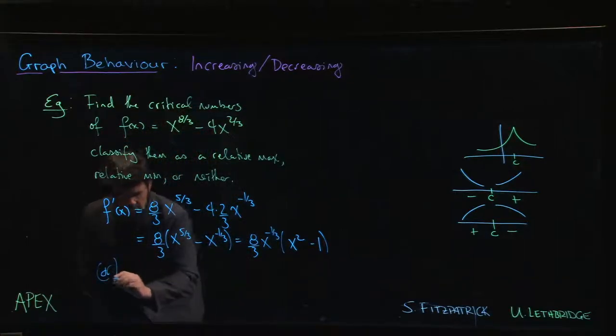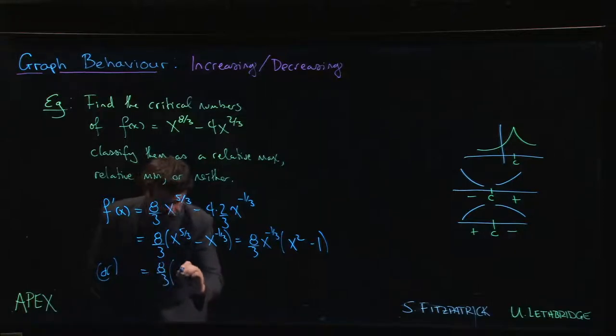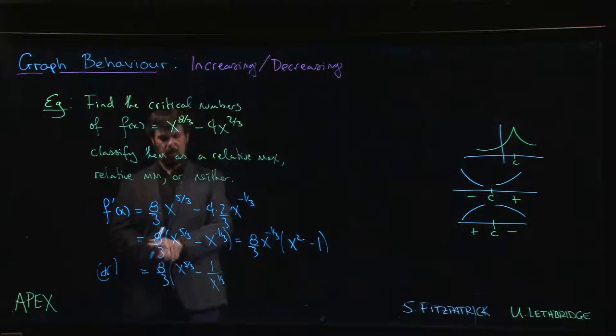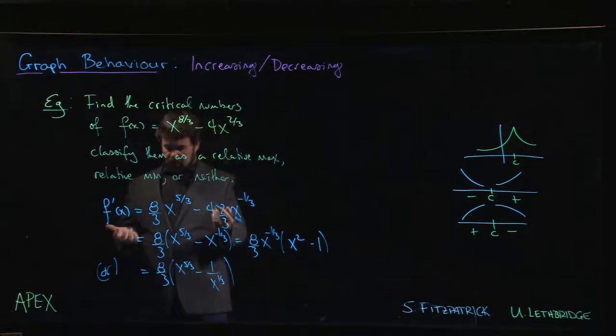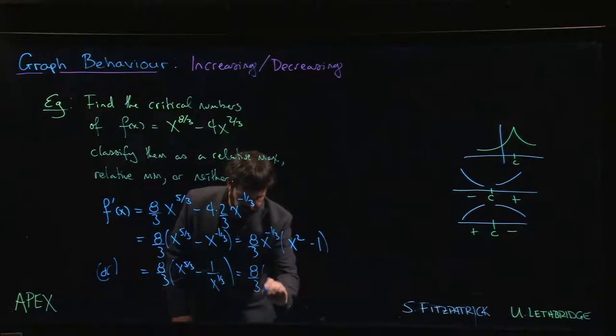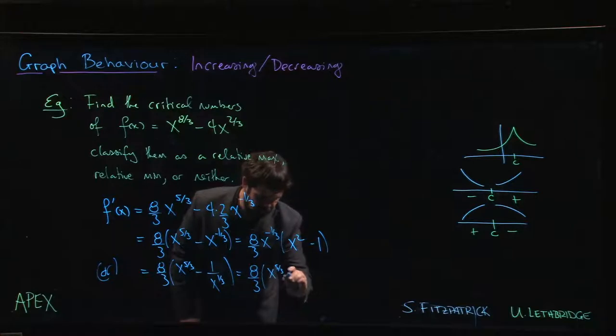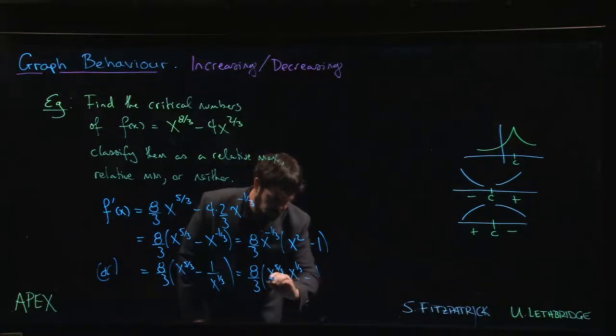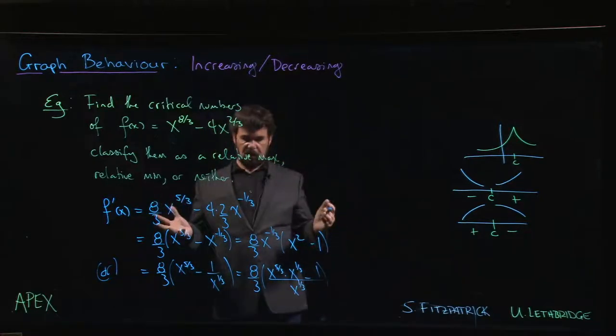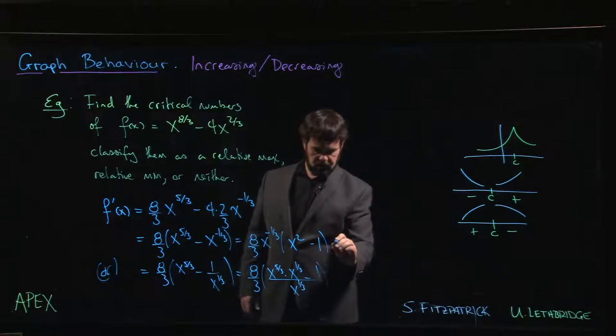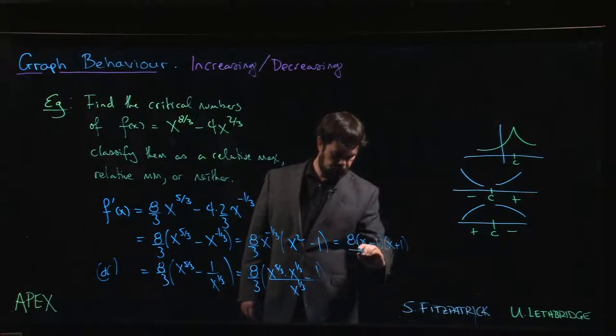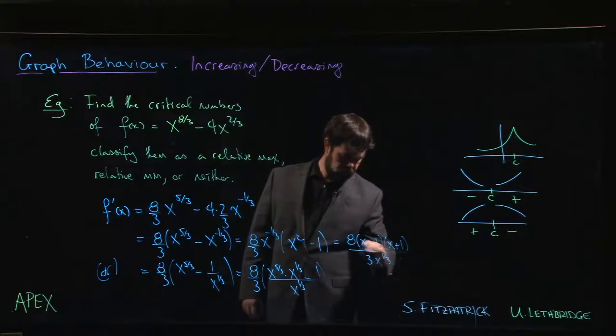If that threw you off, the other thing you can do is remember that negative exponents can move into the denominator. We can also write this as 8 over 3 times x to the 5/3 minus 1 over x to the 1/3. If we want a common denominator we should multiply top and bottom here by x to the 1/3. It's going to give you the same result as we have up above. Ultimately what you're going to end up with is 8 times x minus 1 times x plus 1 over 3 times x to the 1/3.